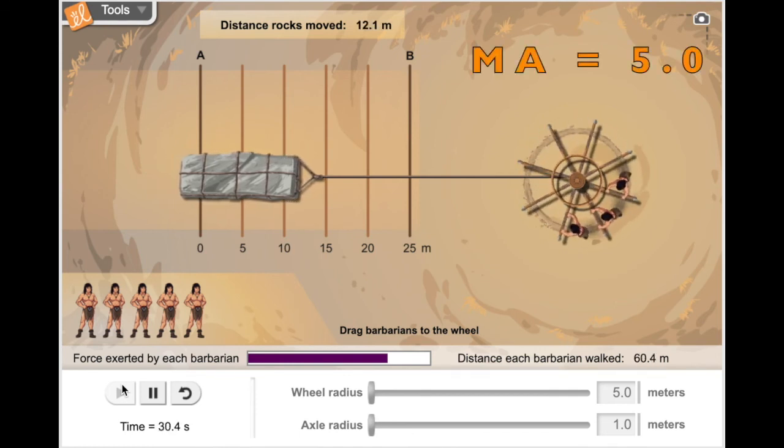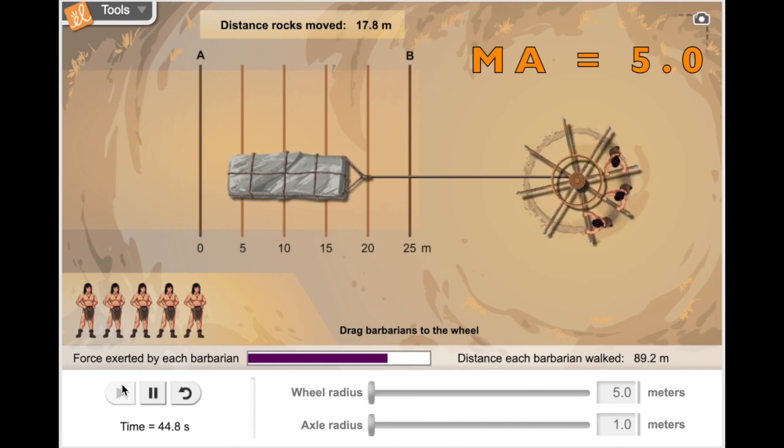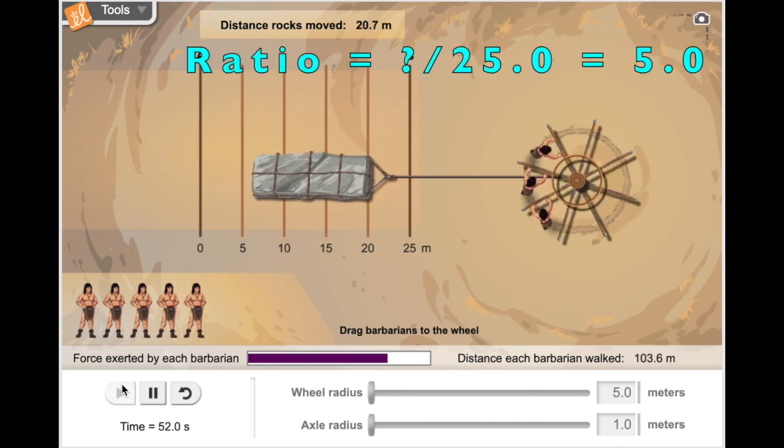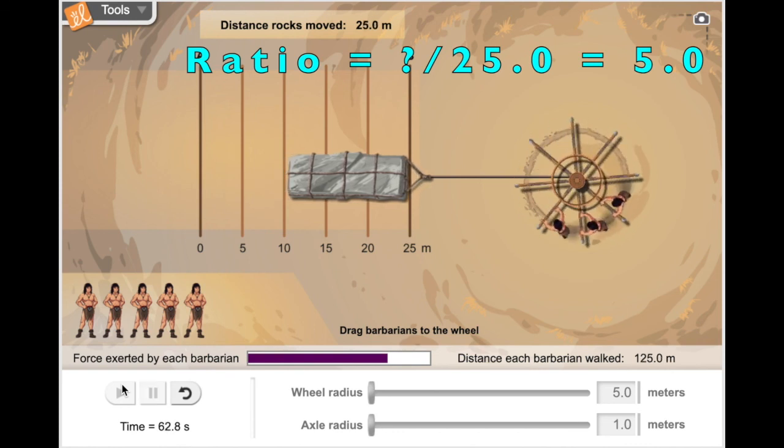If the wheel-to-axle ratio is 5, then they should have to use 1 5th of the force, but have to walk 5 times the distance. 25 meters times 5 is 125 meters.